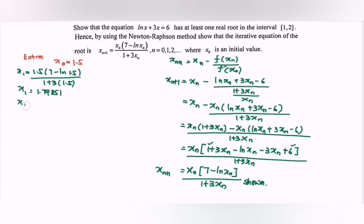Repeat the situation. x₂ = 1.79851(7 - ln 1.79851) / (1 + 3(1.79851)). So x₂ will be equal to 1.80343.